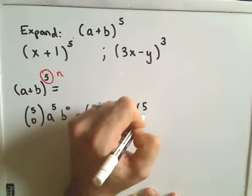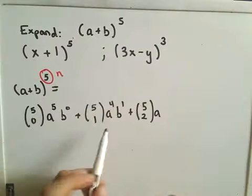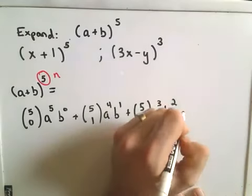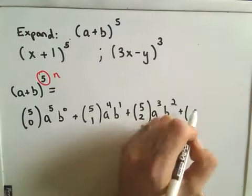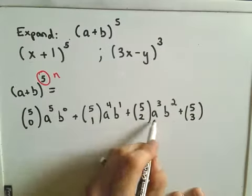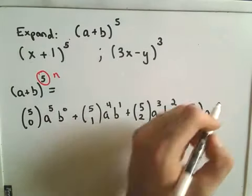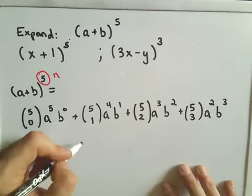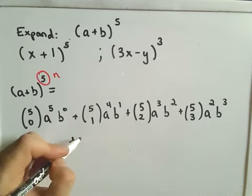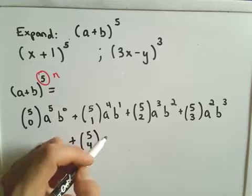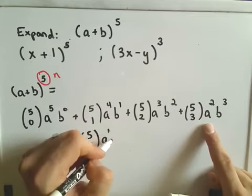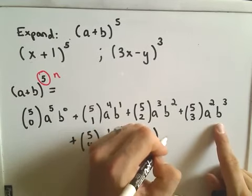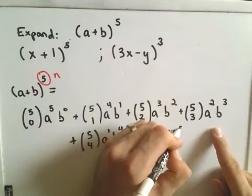Continuing the pattern: 5 choose 2, a to the third, b squared. Then 5 choose 3, a squared, b to the third. Dropping down a line: plus 5 choose 4, a to the first, b to the fourth; plus 5 choose 5, a to the zero, b to the fifth. And now we have the full expansion written out — we still have to calculate these binomial coefficients.